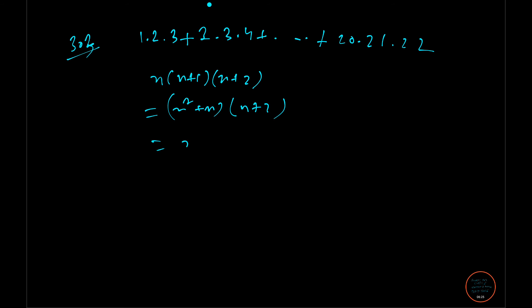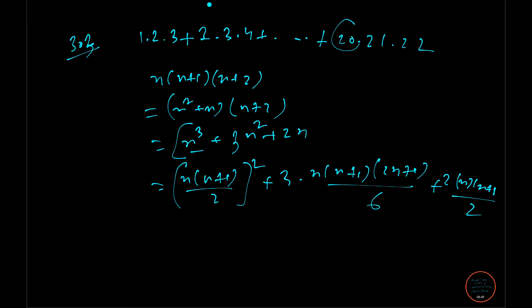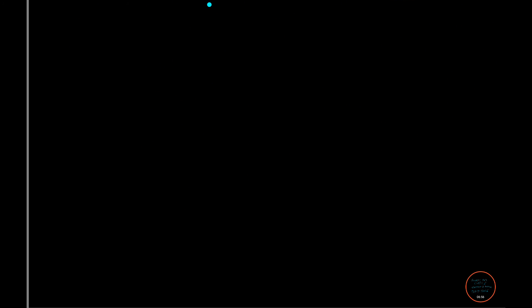So that you can do it: n²+n times n+2, which is n³ + 2n² + n² + 2n, so 3n² + 2n. Put the summation: this will be [n(n+1)/2]², 3[n(n+1)(2n+1)/6], and 2[n(n+1)/2]. All these places, what you have to put? Yes, you guessed it right—put 20 in all these places and you will get your answer.